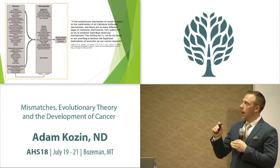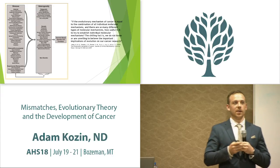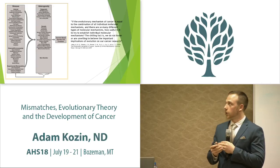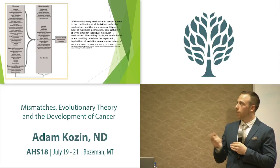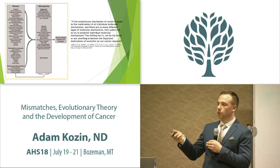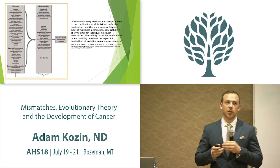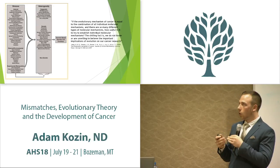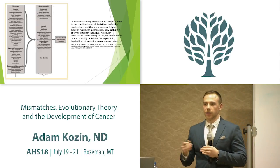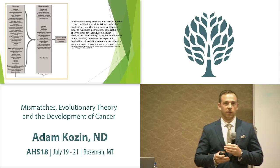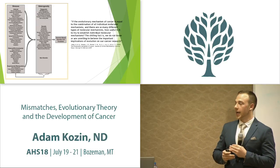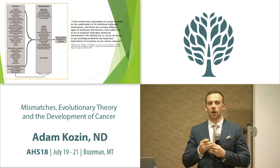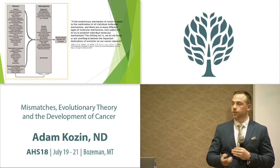Right now research doesn't look at the full picture. There are some evolutionary researchers looking at cancer, but we basically look at each individual portion and try to target therapies towards that. The goal of evolutionary theory is to decrease system stress to limit the heterogeneity of these cells.